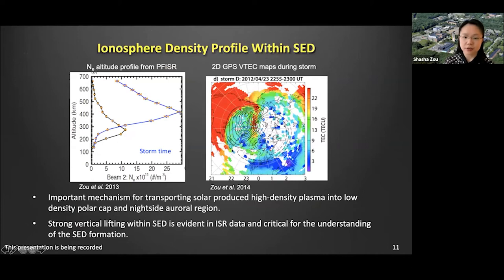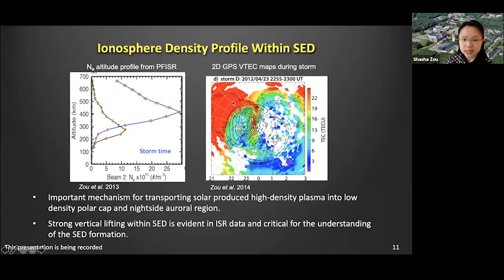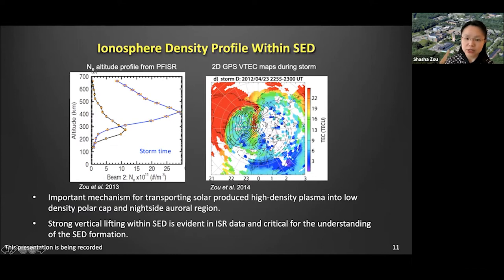This is a TEC map in the northern hemisphere highlighting the storm-enhanced density structure. We typically call this mid-latitude, much larger TEC increase the SED base region. As you can see, this high TEC can also transport into the polar cap regions, or sometimes even return back to the dayside to complete the Dungey cycle. When those plasmas get into higher-latitude regions, we call them SED plumes, and if they are segmented into smaller scales, we call them polar cap patches.